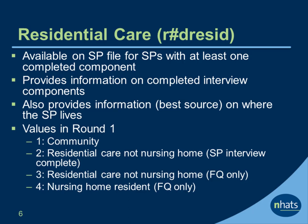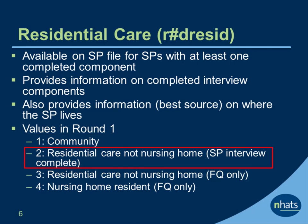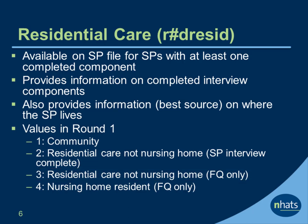In round 1, there are four codes for RESID. Code 1 means the SP lives in the community. Code 2 means the SP lives in a residential care setting other than a nursing home and has a complete SP interview. Code 3 means the SP lives in a residential care setting other than a nursing home but only has an FQ, or facilities questionnaire, completed. Cases assigned 3 in round 1 are never eligible for an SP interview. Code 4 means the SP lives in a nursing home setting and only has an FQ completed. Cases assigned 4 in round 1 are never eligible for an SP interview.